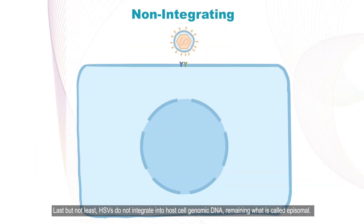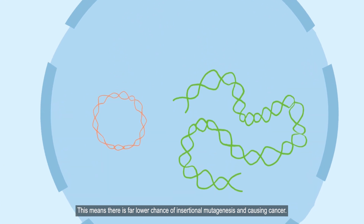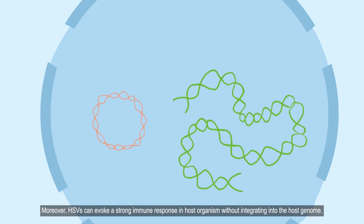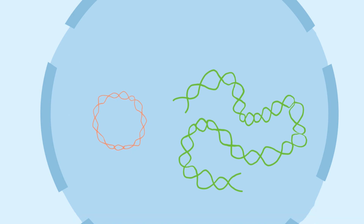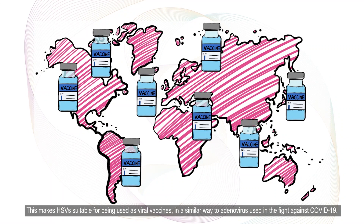Last but not least, HSVs do not integrate into host cell genomic DNA, remaining what is called episomal. This means there is a far lower chance of insertional mutagenesis and causing cancer. Moreover, HSVs can evoke a strong immune response in the host organism without integrating into the host genome. This makes HSVs suitable for being used as viral vaccines, in a similar way to adenoviruses used in the fight against COVID-19.